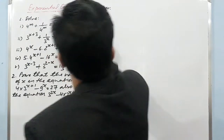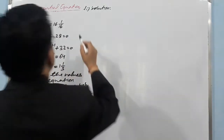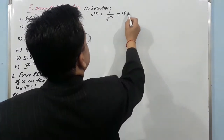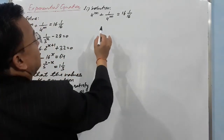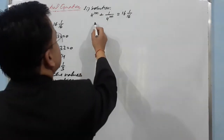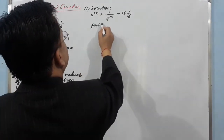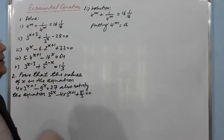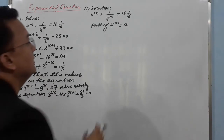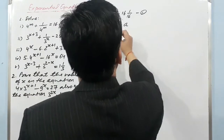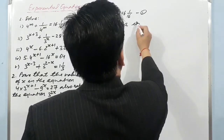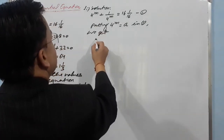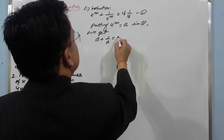Solution one: the question is 4^m + 1/4^m = 16 × (1/16). Very simply, we can use substitution. Putting 4 raised to power m equal to 'a' — you can use any other variable, it doesn't matter. So putting m equal to 'a' in the first equation, we get: a + 1/a = 16 × (1/16).